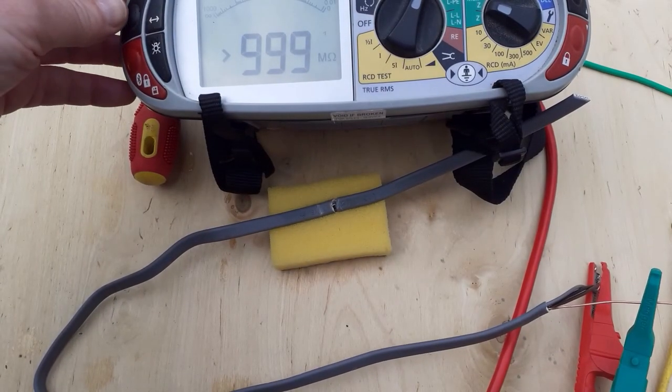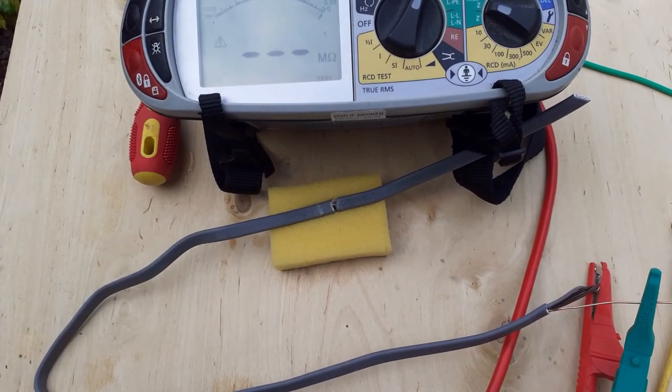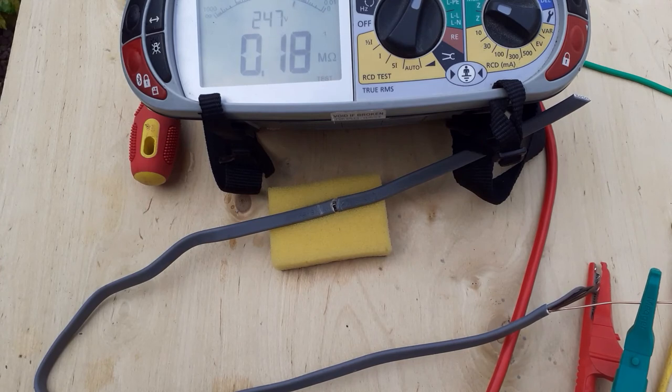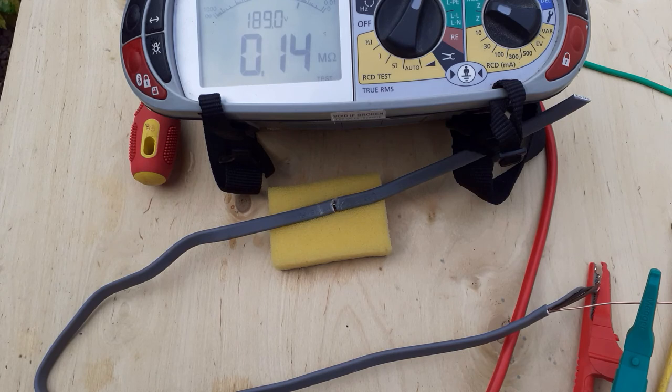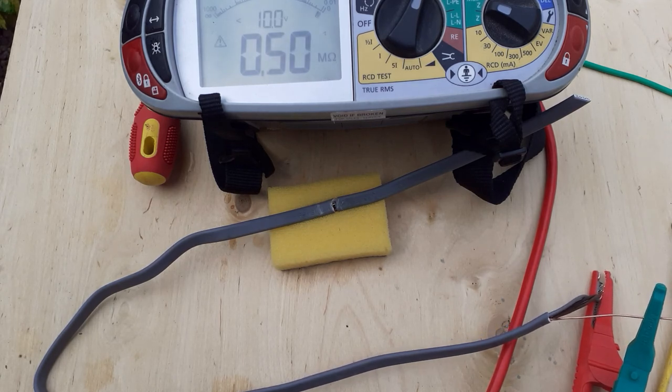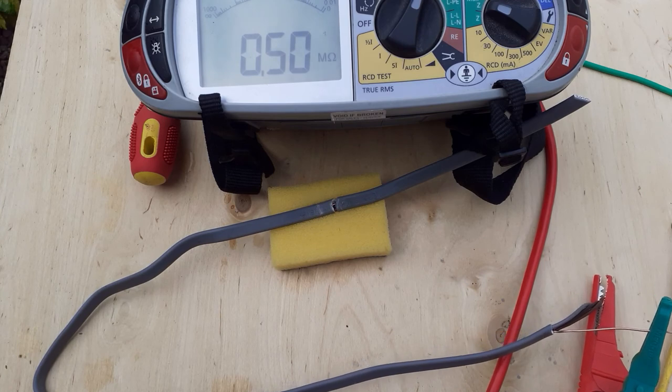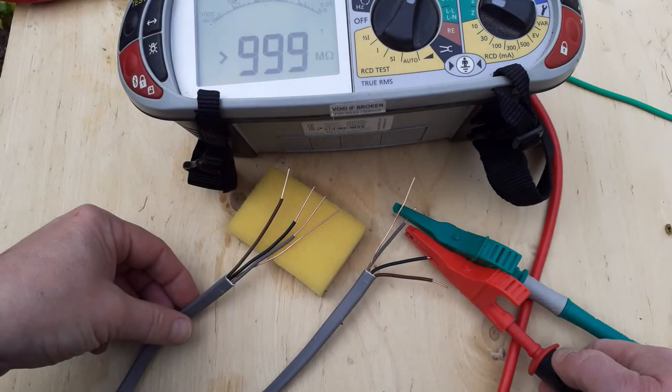As you can see here, all I've done is lay that cable on a slightly damp sponge. Look what's happening to the insulation resistance readings. It's 0.12. It might test okay when you're just holding it in free air. That cable's going to be buried somewhere. It's going to be clipped to something. So you're going to get issues with that cable now. It needs to be replaced. So that was an example of a definite fault causing insulation resistance problems.